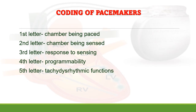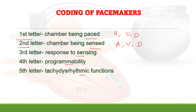Pacemaker coding is based on the area where it is paced, where it is sensed, response to sensing, programmability, and antitachyarrhythmic functions. Based on these features, letters are assigned. The first letter denotes the chamber being paced — atria, ventricle, or dual. The second letter represents the chamber being sensed — atria, ventricle, or dual. The third letter represents response to sensing — inhibited or none. The fourth letter is programmability and the fifth letter is antitachyarrhythmic function.